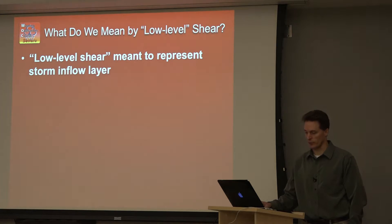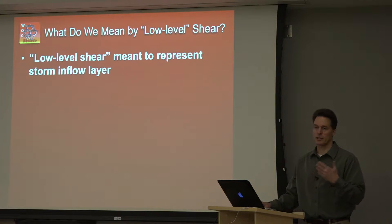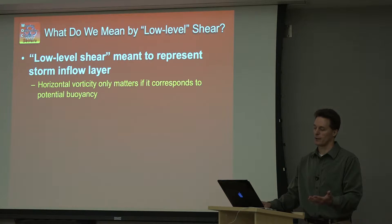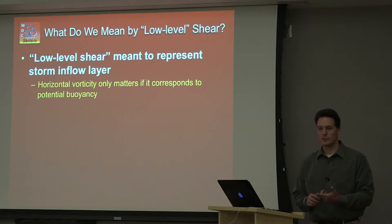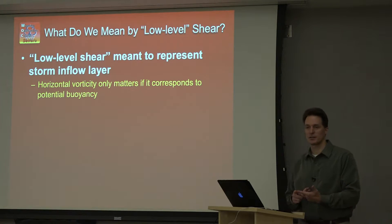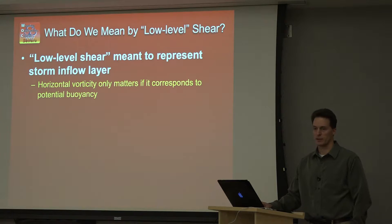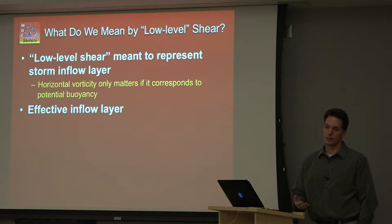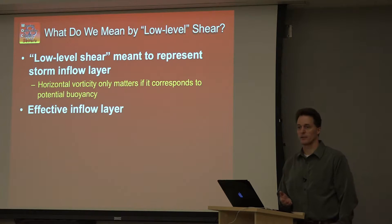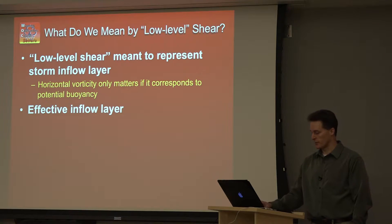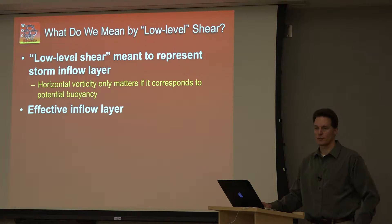What do we mean by low-level shear? It's meant to indicate the storm inflow layer — something that represents the buoyant air feeding the deep updraft. If the horizontal vorticity is not associated with buoyancy, it's irrelevant in terms of mesocyclone potential. This is where we come to a concept known as the effective inflow layer, which is essentially a thermodynamic check on the profile to see if there's buoyancy associated with the lifted parcels.